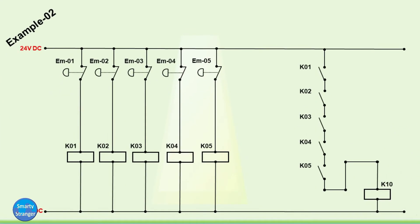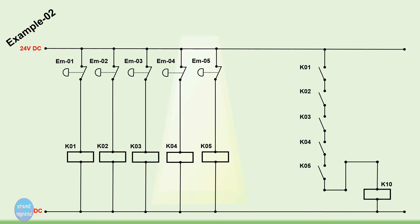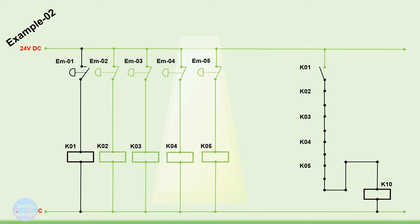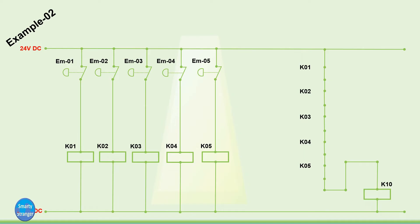Let us consider another example, example 02. Here we have an emergency circuit. Five emergencies are installed in different areas of the field to break the connection. These emergencies are connected with 5 relays separately, and contacts of these emergencies are used in series to operate relay K-10. Contacts of K-10 could be used in other outputs for safety purposes. In normal condition, when the circuit is energized, all relays are operating and their contacts are energizing relay K-10 — this is the healthy condition. When an operator triggers an emergency in any area, its relay de-energizes, breaking the series connection of K-10, which also de-energizes. When K-10 de-energizes, all program outputs stop. When the operator normalizes the emergency after inspection, the circuit becomes healthy again.